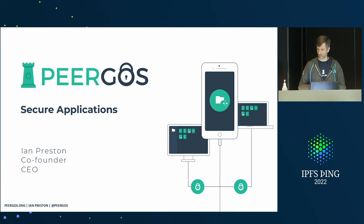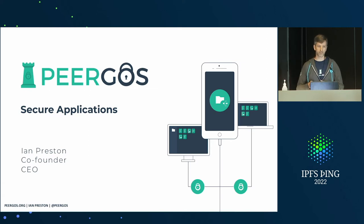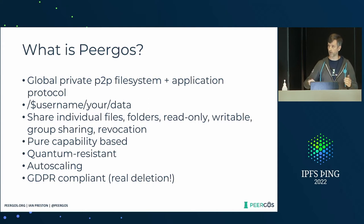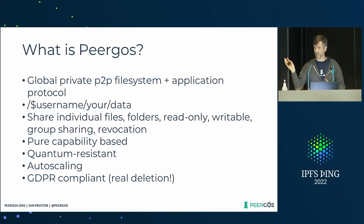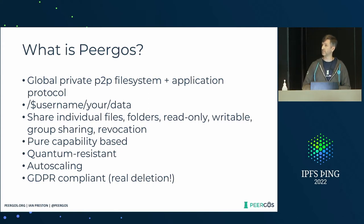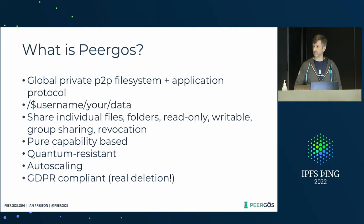On the topic of the public ciphertext problem — we've solved that. I talked about that yesterday in our talk. To focus on applications, I'll give you a super quick overview of Pygos. It's a global peer-to-peer encrypted file system and application protocol. Being a file system, everything has a unique path which begins with your username. Fine-grained access control — it's pure capability-based, you don't need to rely on a server to enforce these capabilities. It's just math. It's quantum resistant, auto-scaling, GDPR compliant, and you get real deletion.